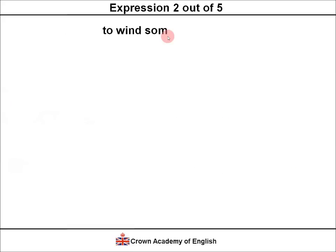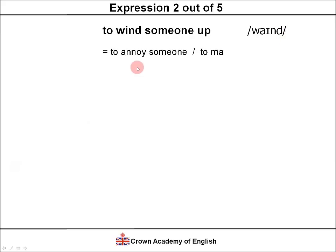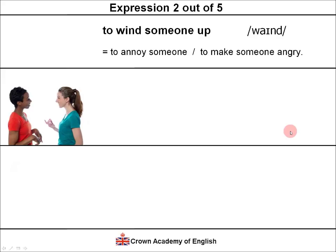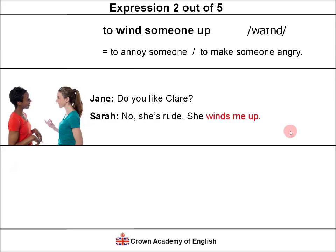Expression two: to wind someone up. Notice the pronunciation — we do not say 'wind' like the weather. This is a verb and we say 'wind.' Again, this means to annoy someone or to make someone angry. This is informal as well. Example: Jane asks, 'Do you like Claire?' And Sarah replies, 'No. She's rude. She winds me up.' So she makes me angry.